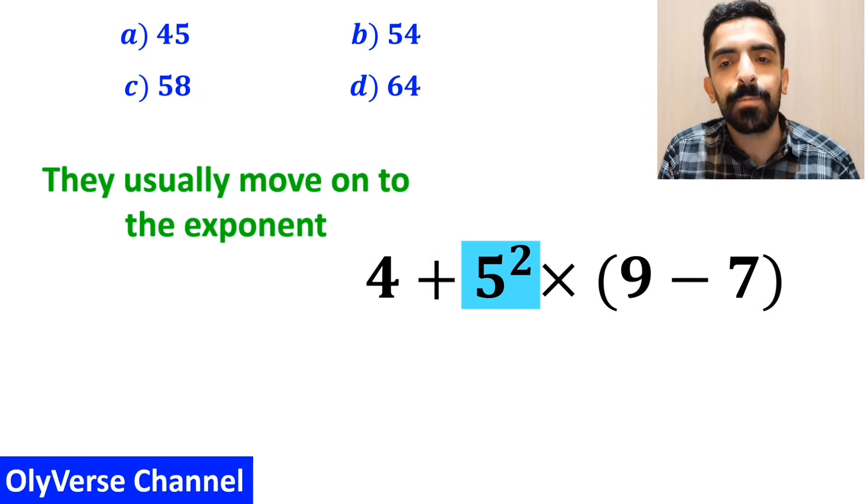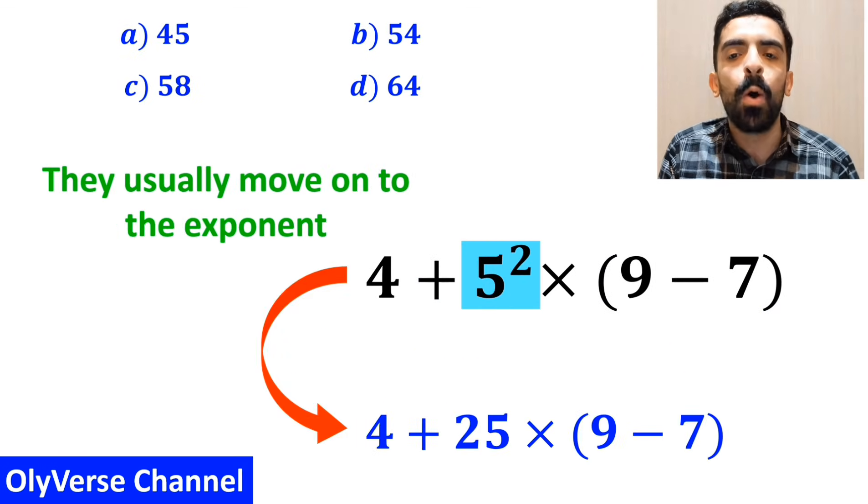The next step, they usually move on to the exponent and replace this expression with 4 + 25 times (9 - 7).